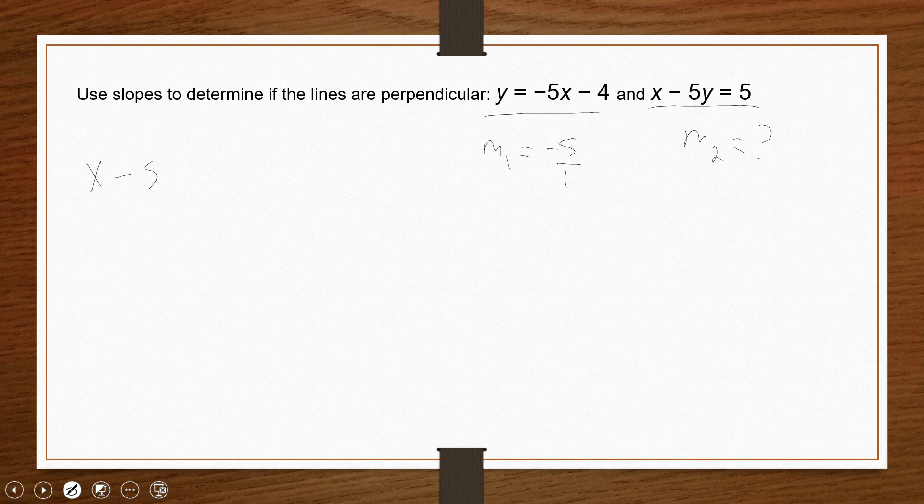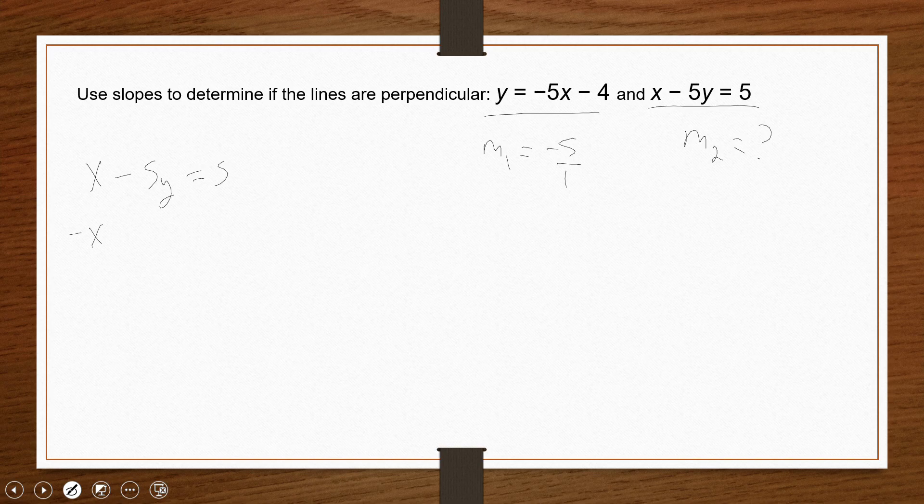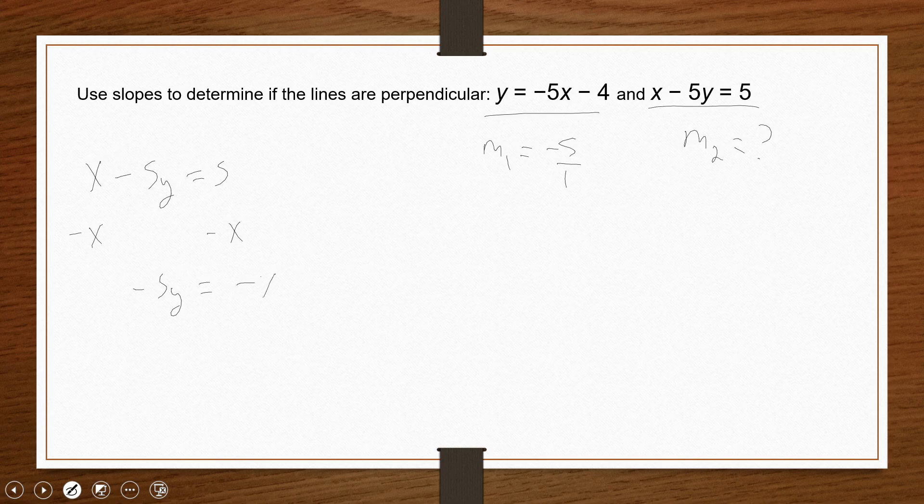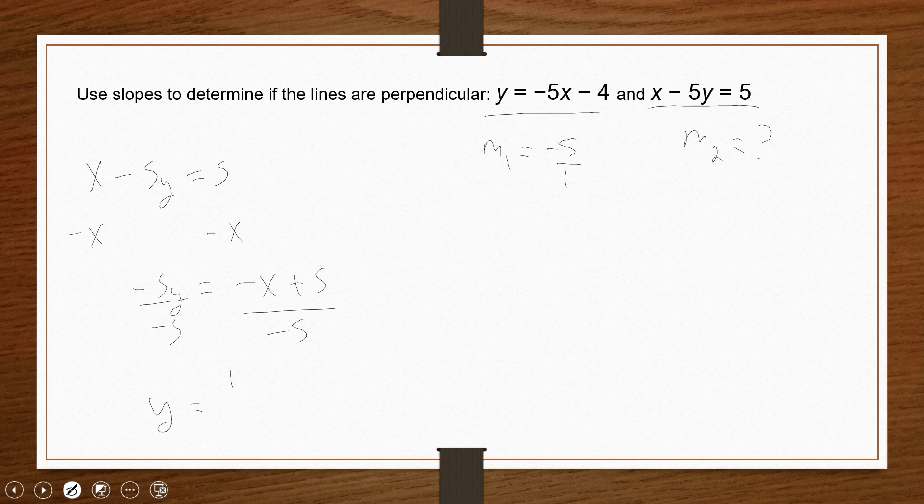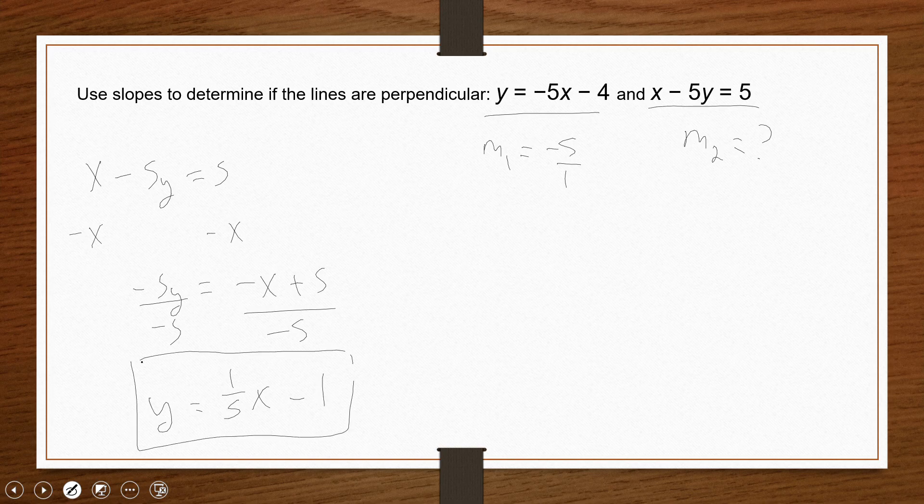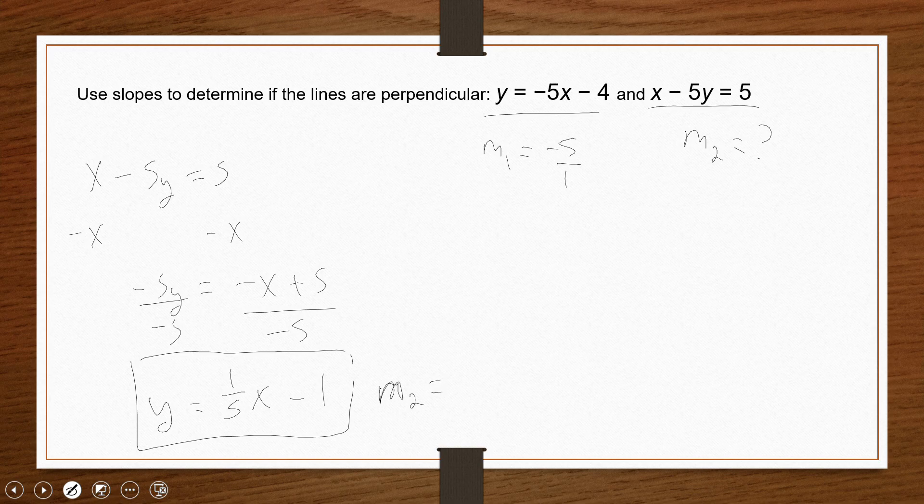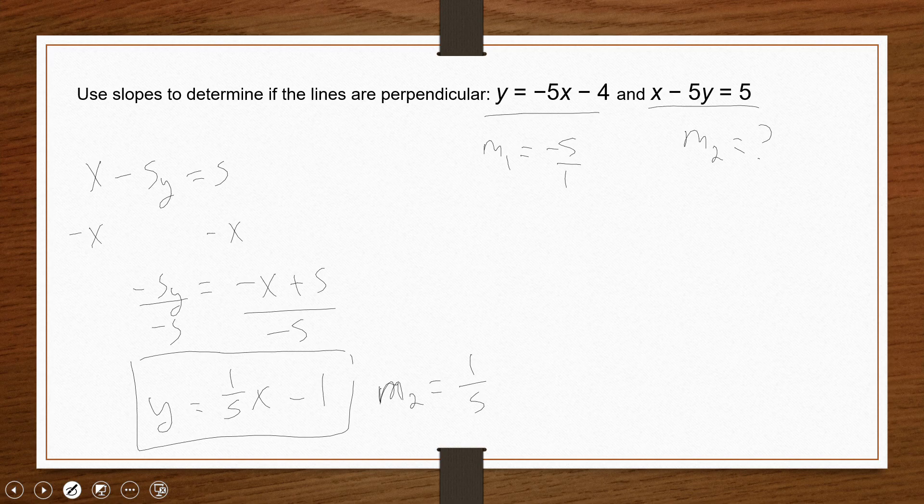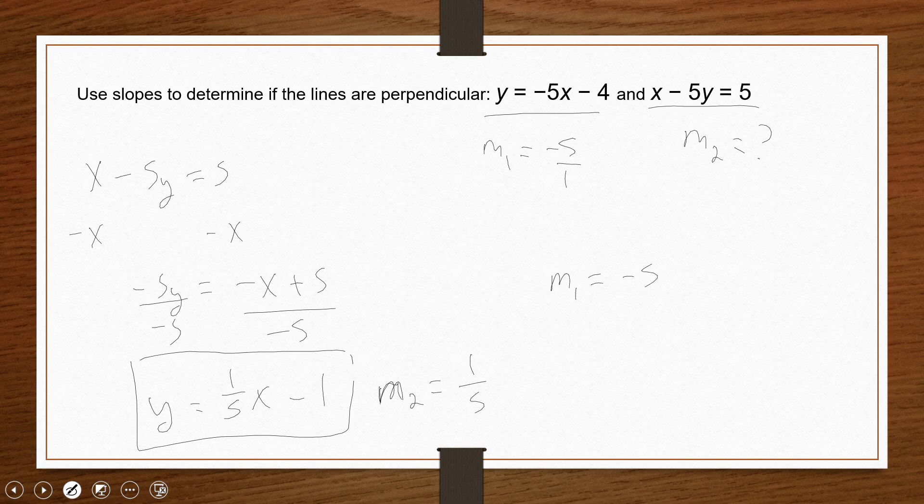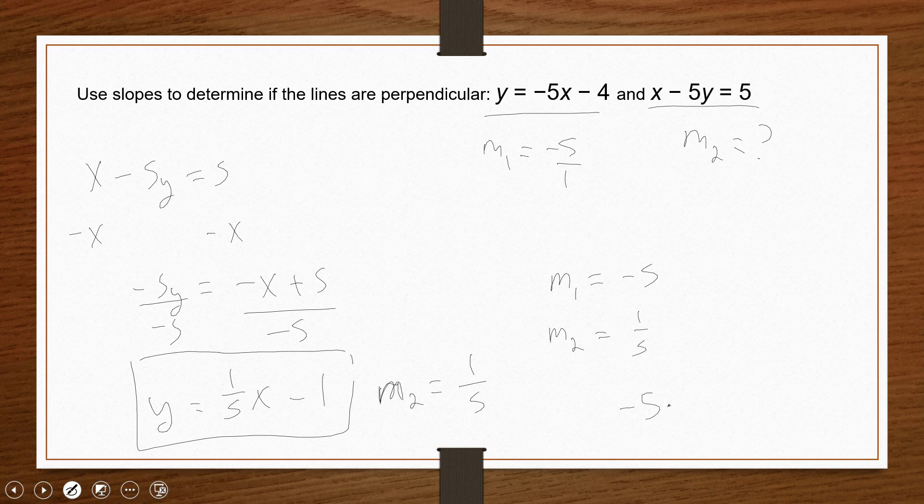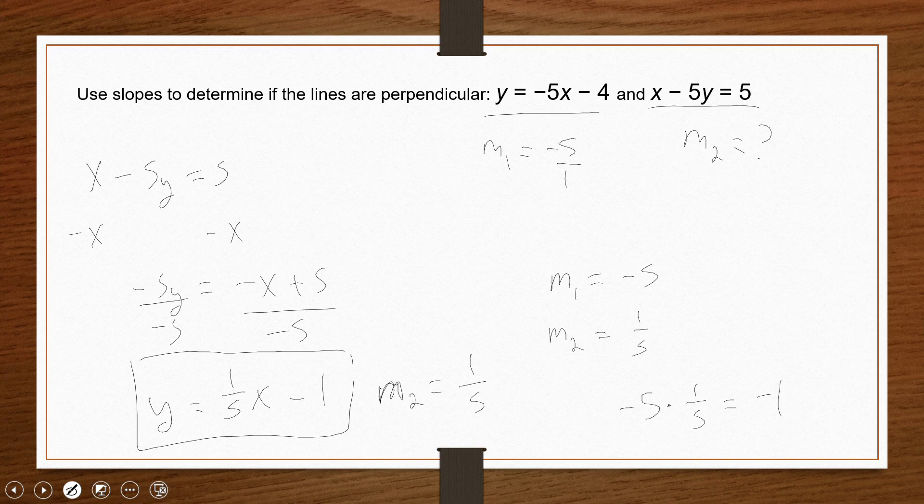Now given this equation I have x minus 5y is equal to 5. So by subtraction I can get negative 5y by itself and then divide by negative 5 on each side such that I get y is equal to positive 1/5th x minus 1. So the slope of my second line, my m2, happens to be 1/5th. So the question is do these two create a product that is equal to negative 1. So m1 is negative 5, m2 is positive 1/5th, multiplying these two together sure enough does get me negative 1. So I can say with some certainty that these two lines are perpendicular to one another.